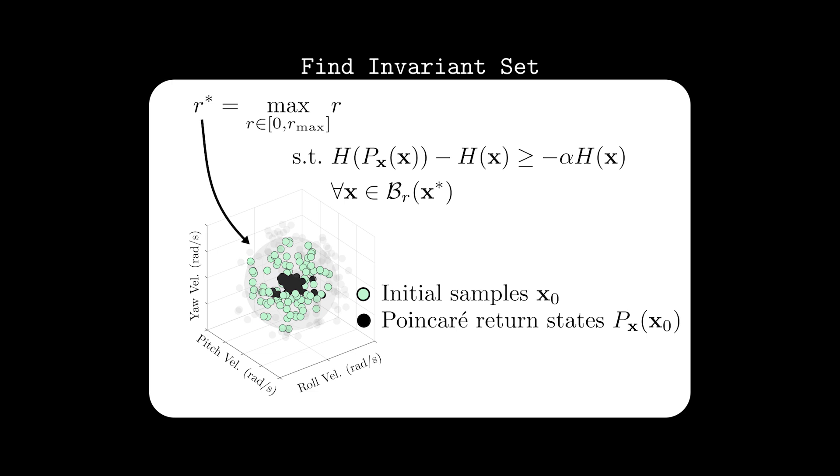Then, an optimization problem is formulated to solve for the largest set such that the reduced discrete-time system remains forward invariant. The size of this set, as captured by the radius of the ball centered around the fixed point, becomes our metric of robustness.